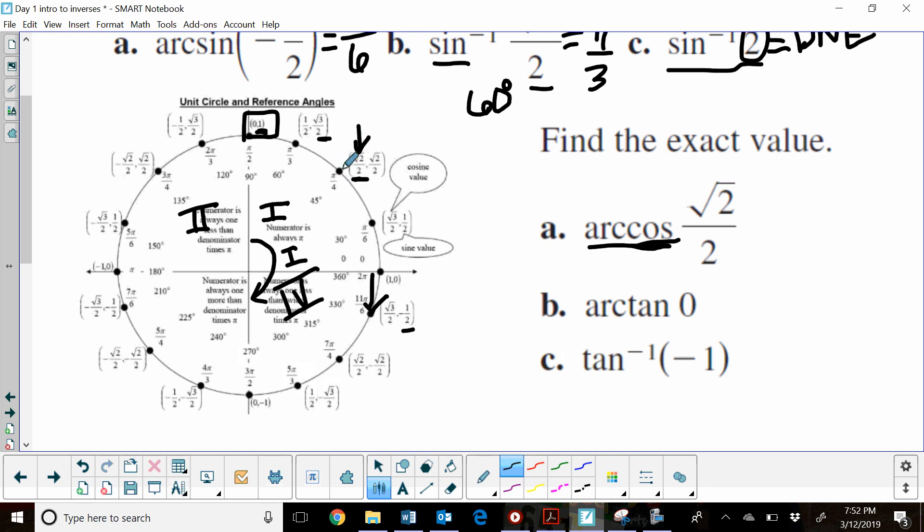Right here, I see my x value has a value of √2/2. I can either answer that in radians with π/4, or I can answer that in degrees, which is 45 degrees.